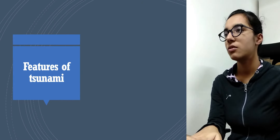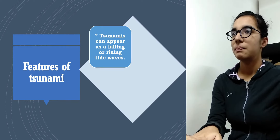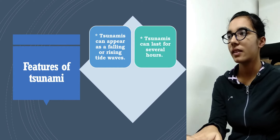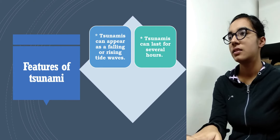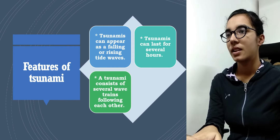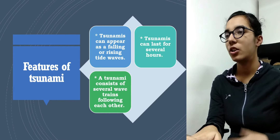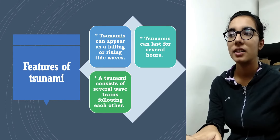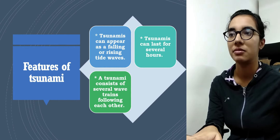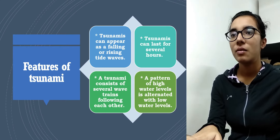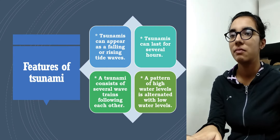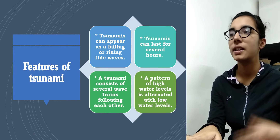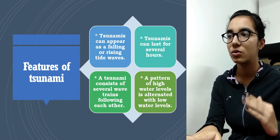Let's talk about the features of tsunami. A tsunami can appear as a falling or rising tidal wave. A tsunami can last for several hours. It consists of several wave trains following each other — it is called a wave train because it is not a single wave but consists of a series of waves. A pattern of high water level alternates with low water level.